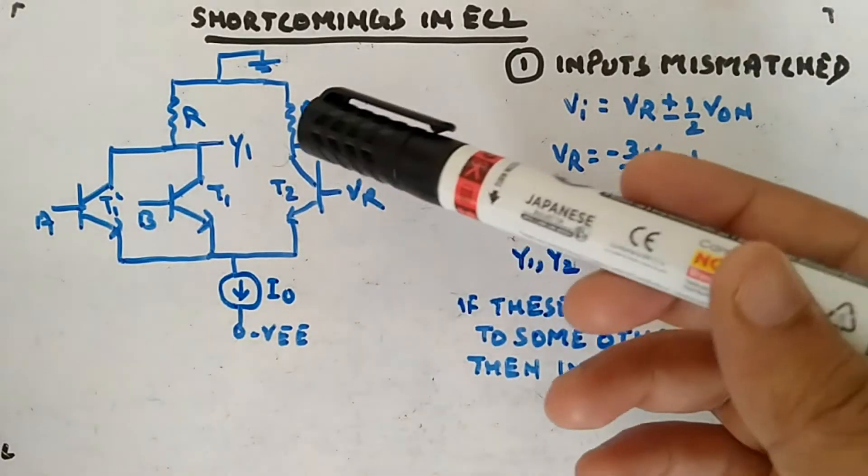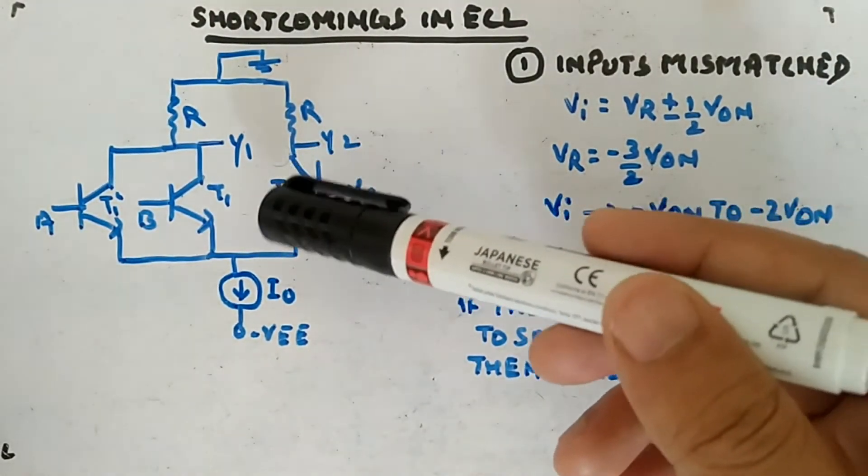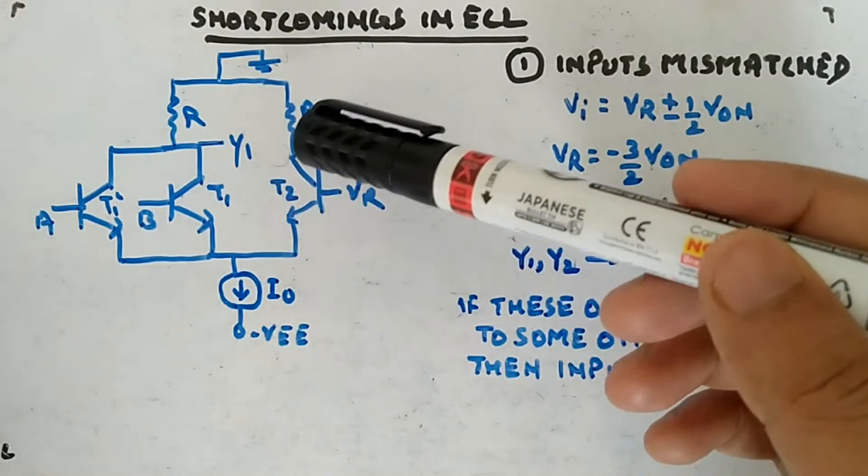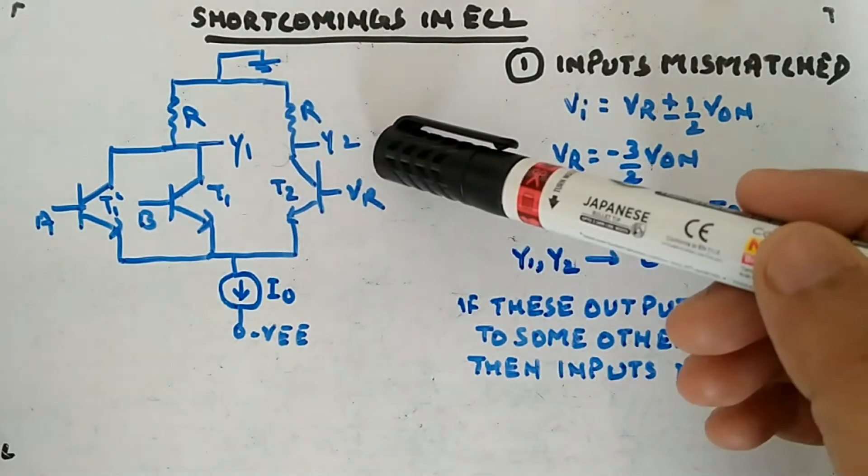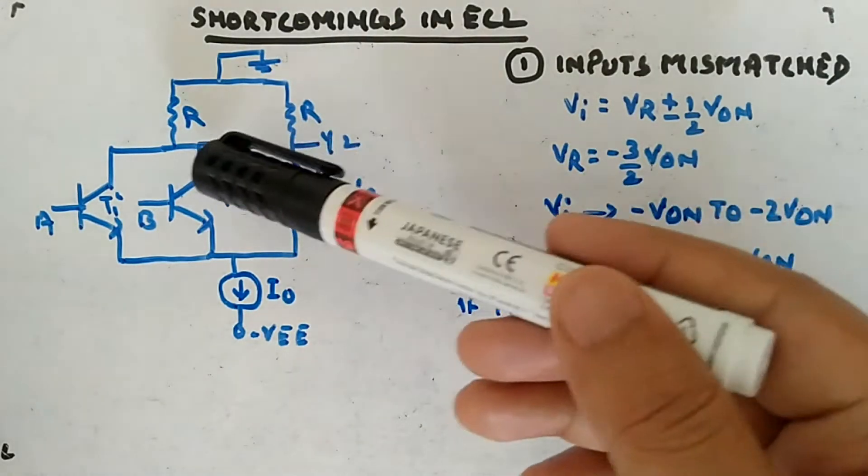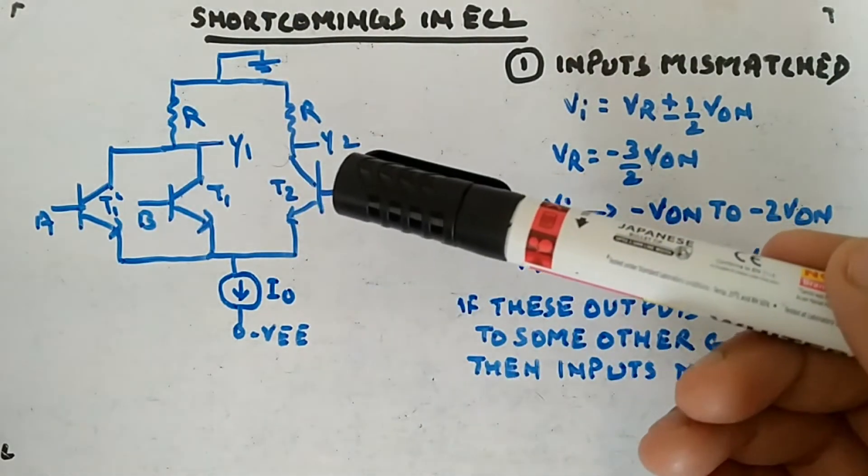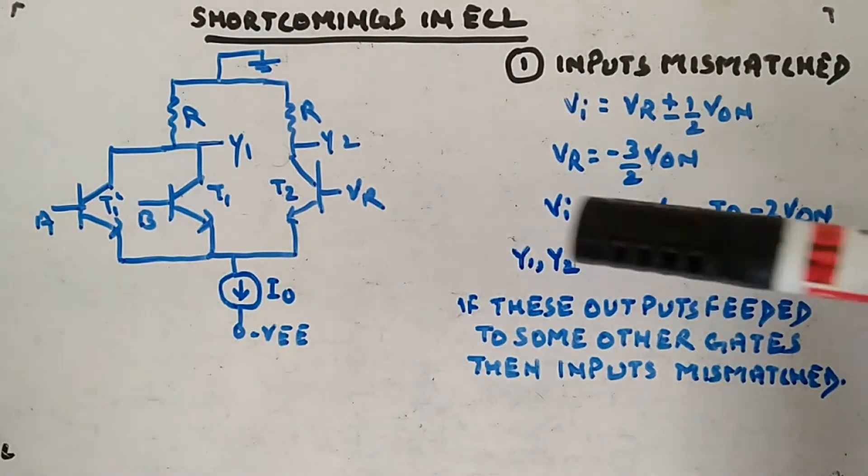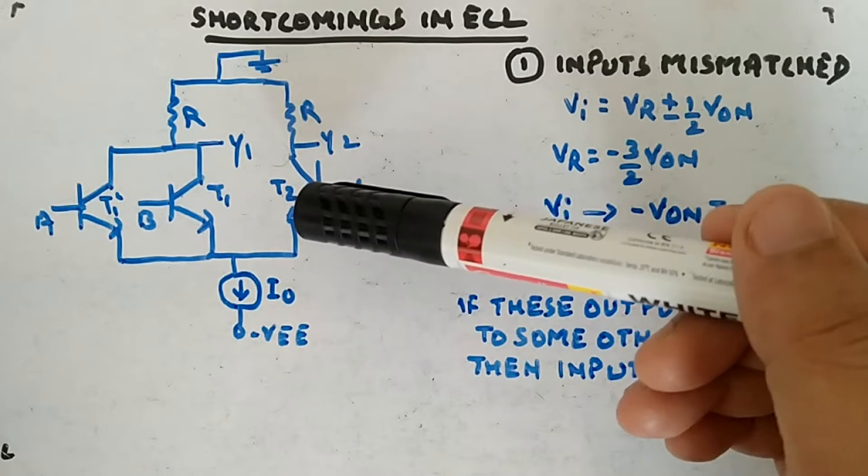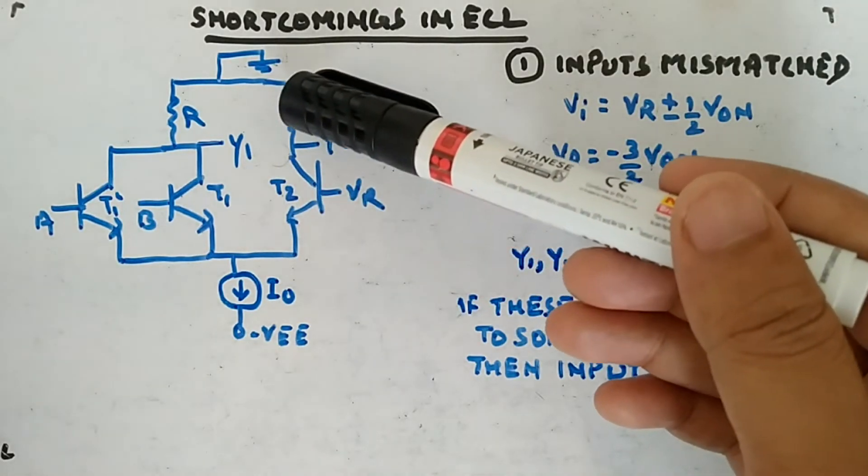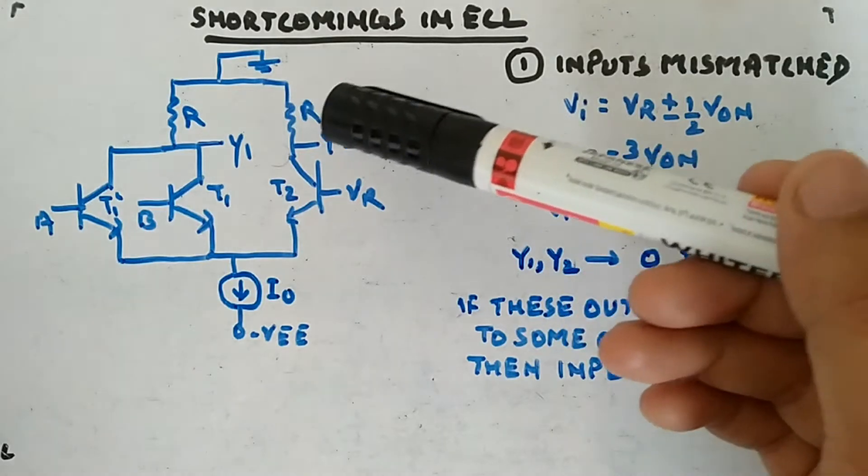Now what will be the output range? If this transistor is not conducting, is in cutoff, then no current will flow through this branch, no drop at R. So Y2 will be connected to ground. Y will be equal to 0 here. When the transistor is conducting in active region, there will be a drop across this which will be I0 R.